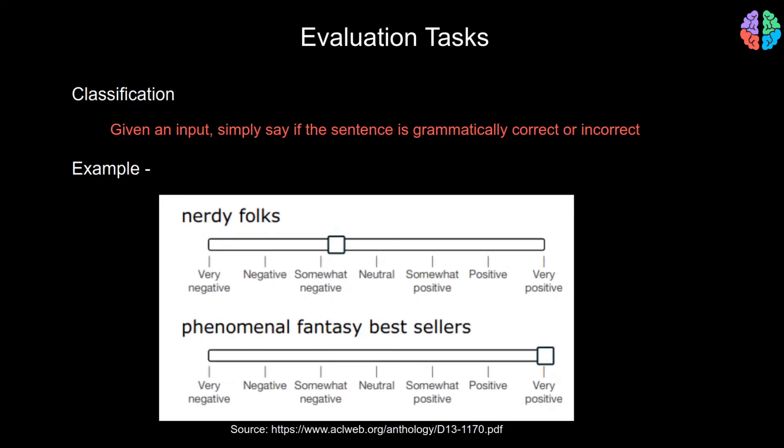The third task is classification. For classification, you can do a simple binary classification to say if the given sentence is grammatically correct or not. Or you can do a sentiment classification to say if the sentence is positive or neutral or somewhat in between.